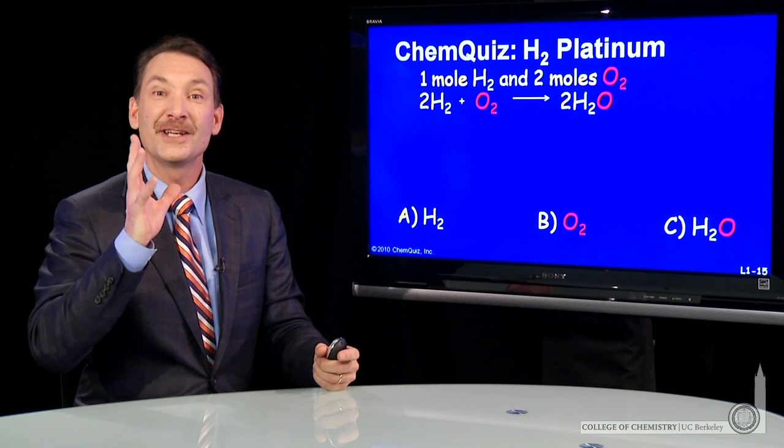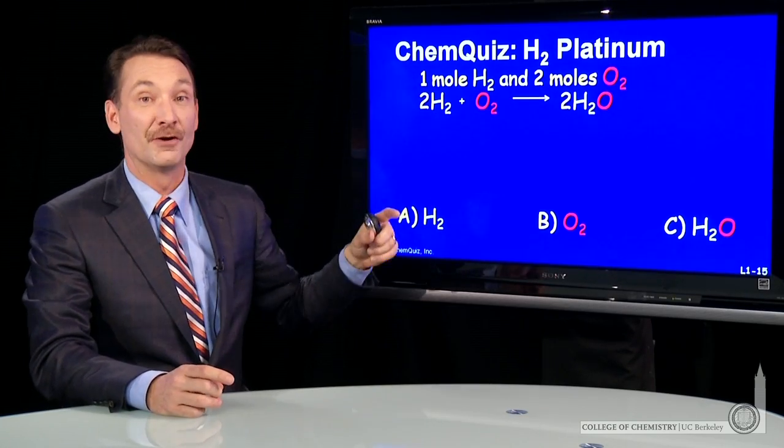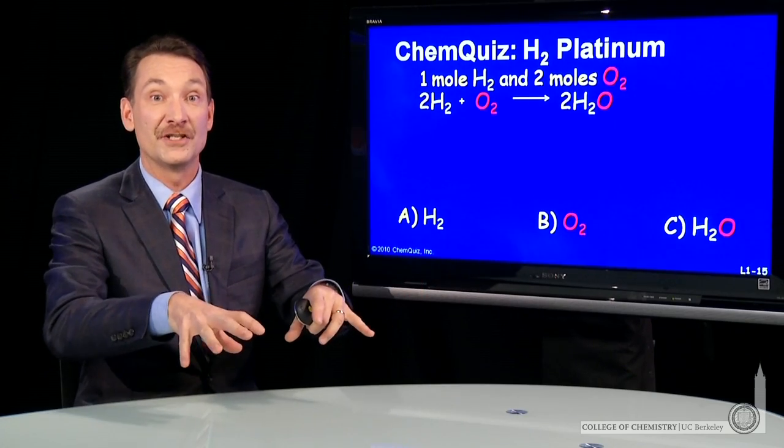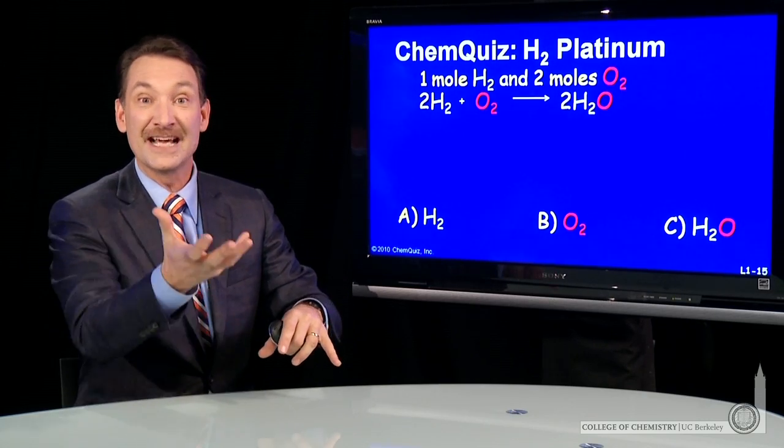Now, we weren't given the reagents hydrogen and oxygen in that ratio. In fact, you hardly ever are. You don't provide things in the exact chemical ratio. And when you don't, one thing will run out before the other thing. One thing will be in excess.